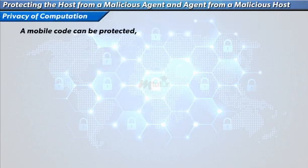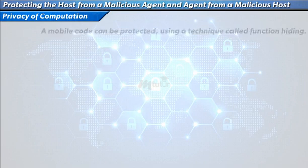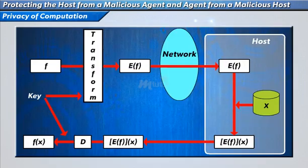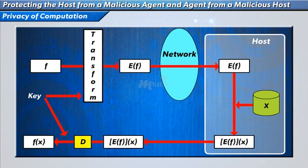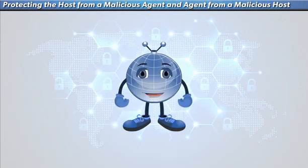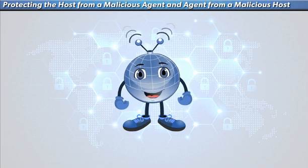The last technique is privacy of computation, using a method called function hiding. In function hiding, a function F is encrypted into E(F) by its sender. E(F) is then run on the malicious site with X as an input. The result of E(F(X)) is returned and decrypted, yielding the result of F(X).